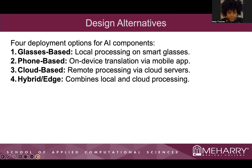For the design alternatives, there were four deployment options for the AI component: a glasses-based, a phone-based, a cloud-based, and a hybrid/edge-based option. The glasses-based uses local processing on smart glasses. The phone-based uses on-device translation via mobile app. The cloud-based uses remote processing via cloud servers. And the hybrid/edge combines local and cloud processing.